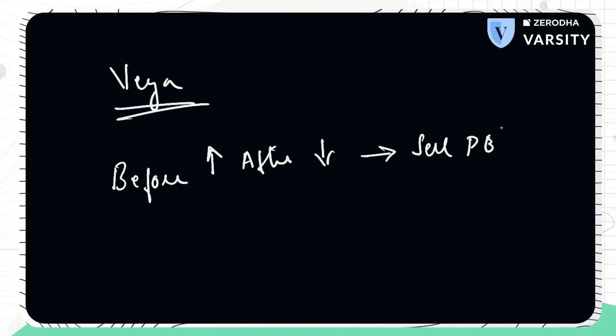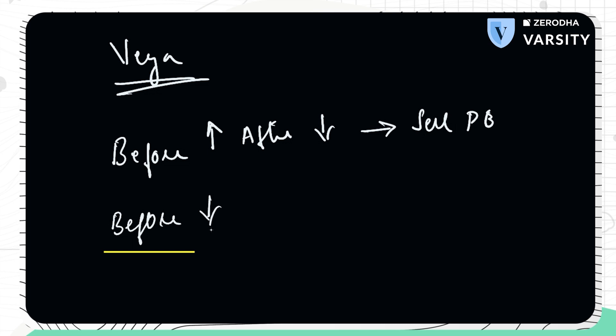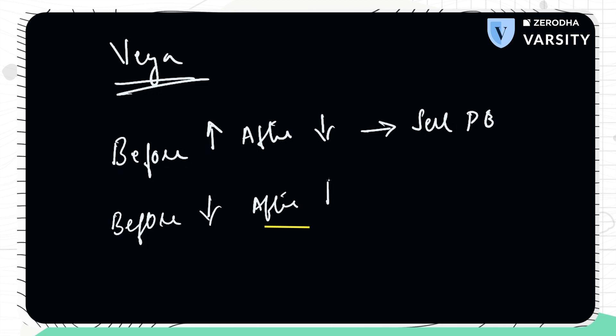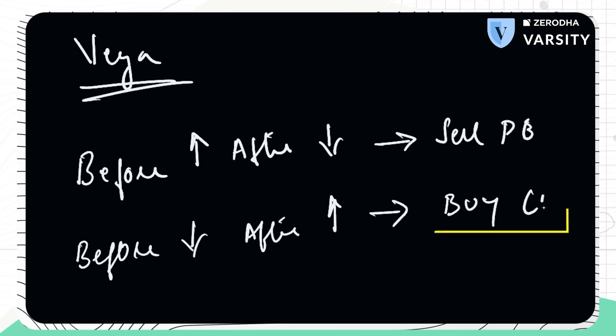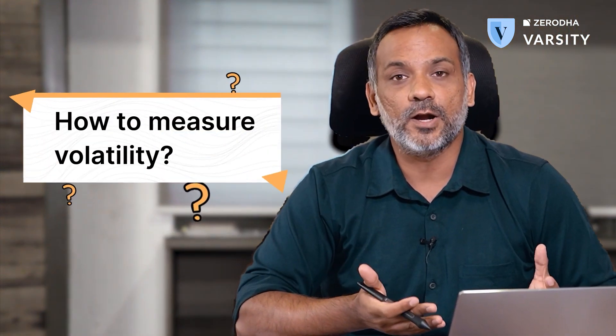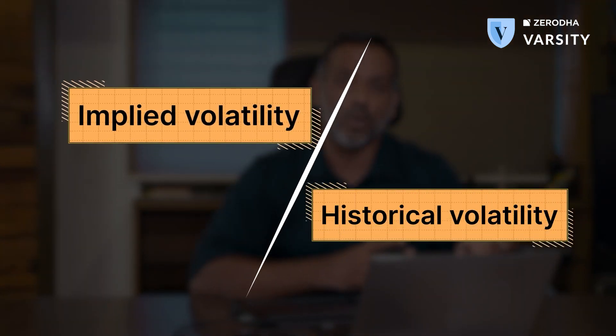Another scenario: if volatility is low before you take the trade and you expect it to increase after, you are better off buying a call rather than selling a put. Now, how do you figure out whether volatility is high or low? One easy method is to compare the current implied volatility in the market with the historical volatility, and develop a sense of where volatility is and where it will go after you take the trade. This is not the best method, but it's the easiest and gives you a quick way of assessing volatility.